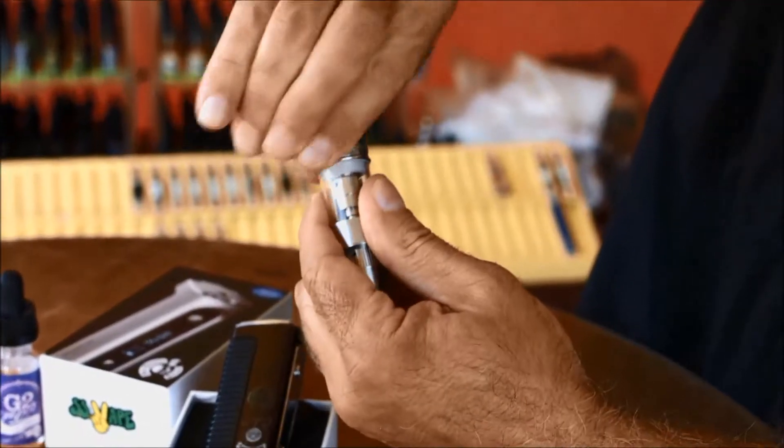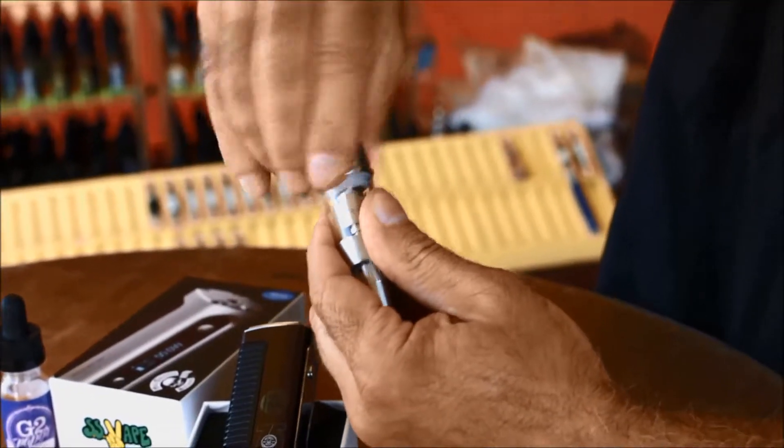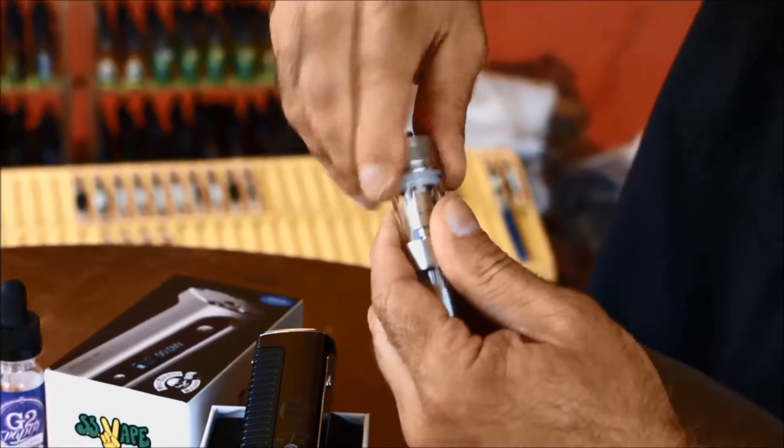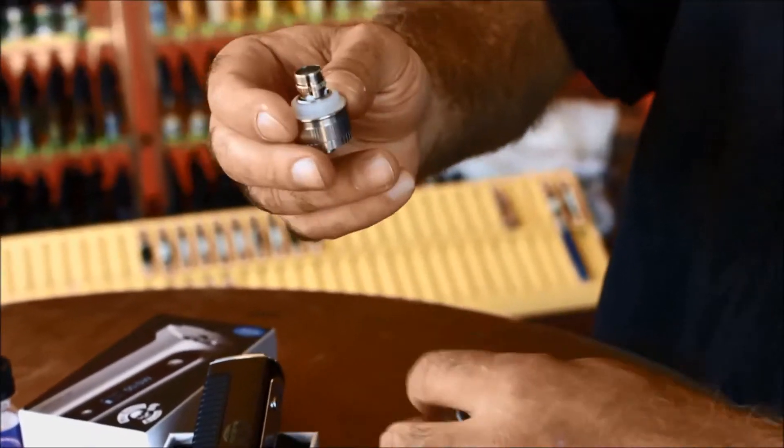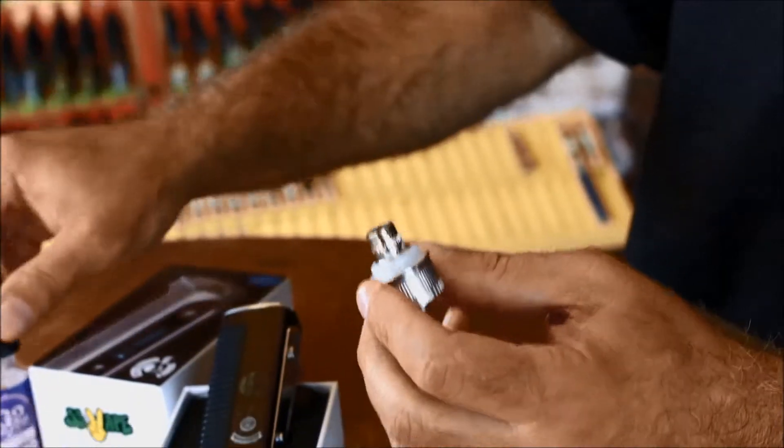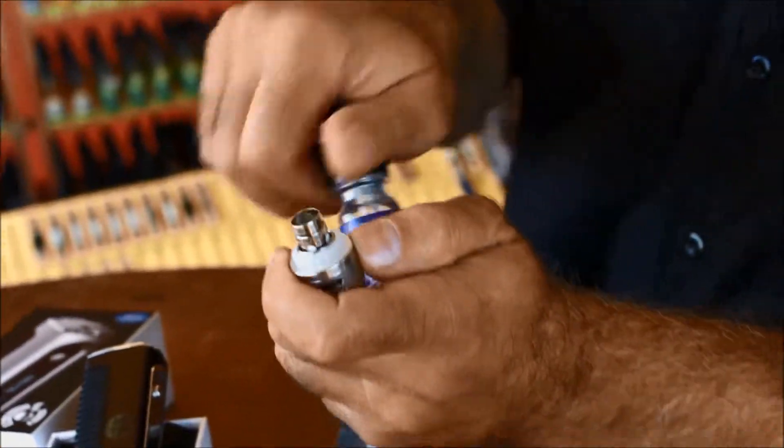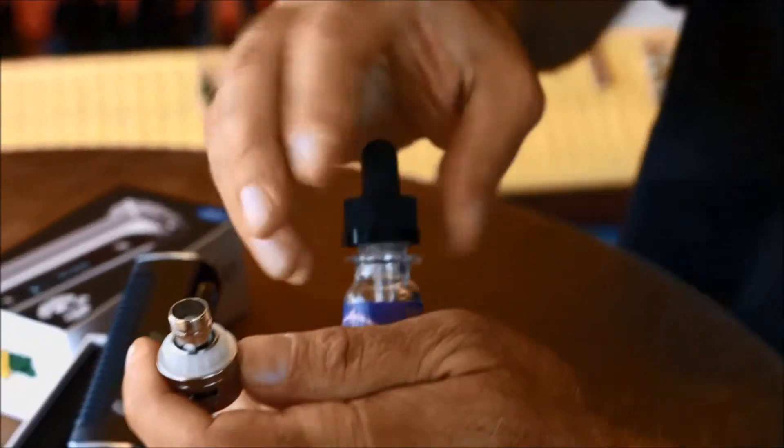Then you unscrew the base from the tank and you'll immediately notice the atomizer. This cylinder is filled with cotton and a coil. It absorbs the liquid inside the tank, it heats up the coil, and it creates the vapor.